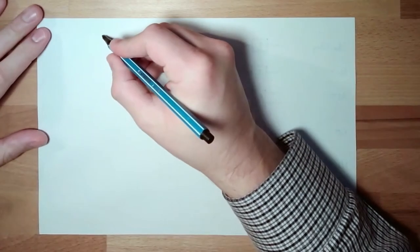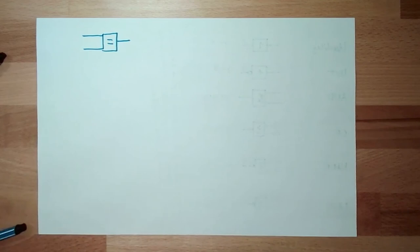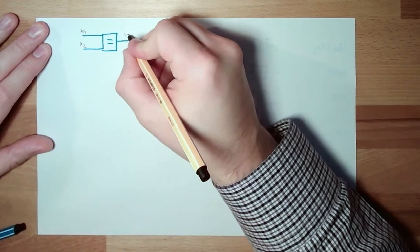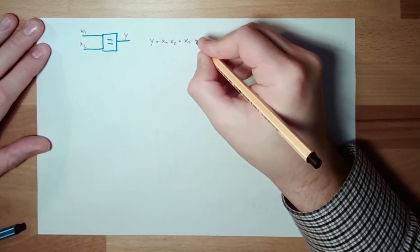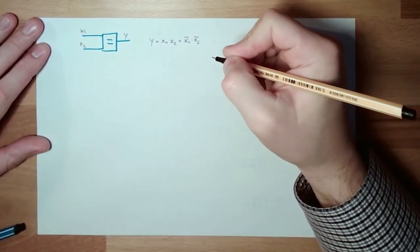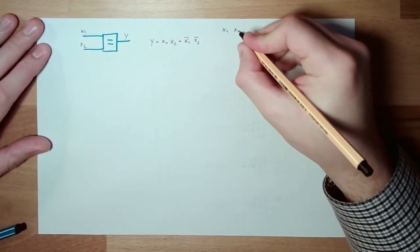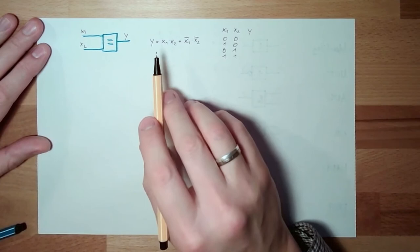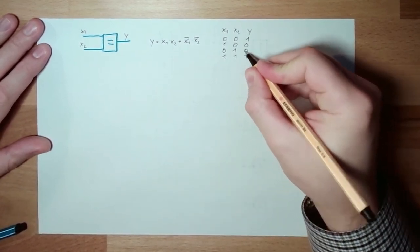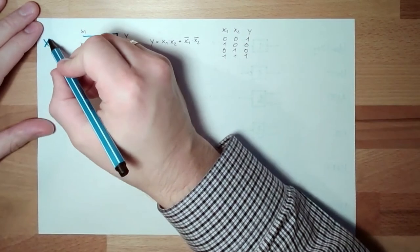There is the EQUIVALENT gate — also called XNOR. Inputs X1, X2, output Y. The logical equation is Y equals (X1 AND X2) OR (NOT X1 AND NOT X2). The table of truth: 0,0→1; 0,1→0; 1,0→0; 1,1→1. Output is one only when both inputs are equal — either both zero or both one.